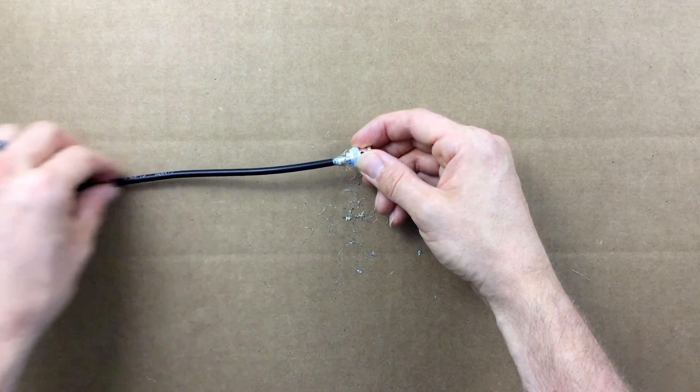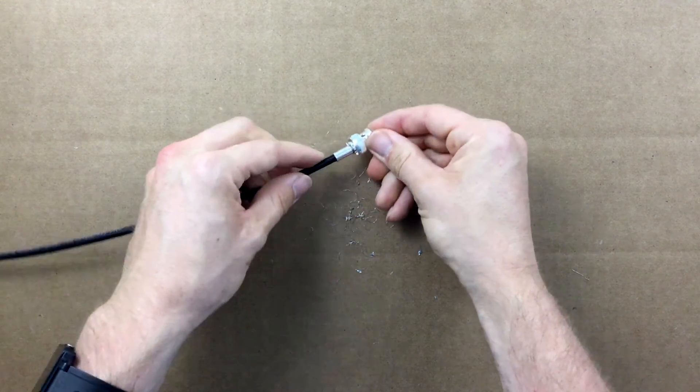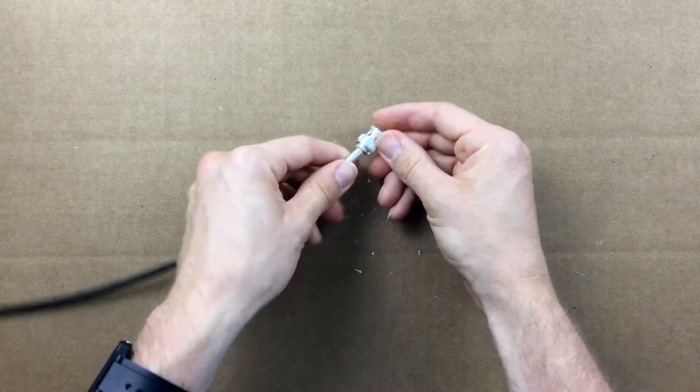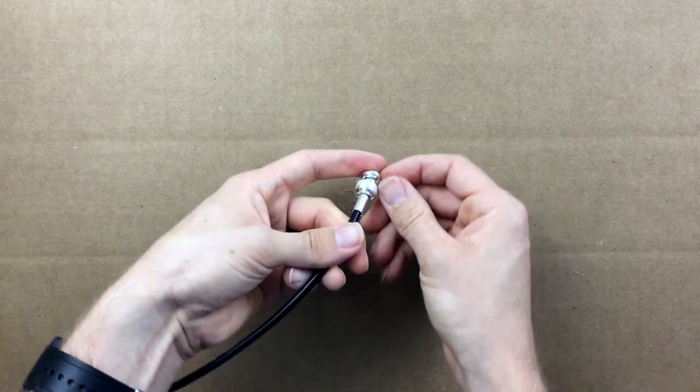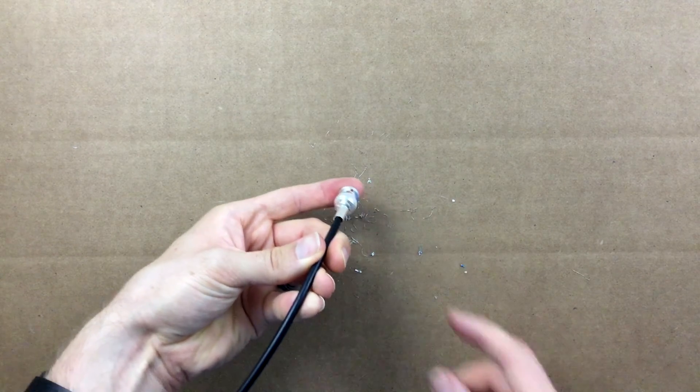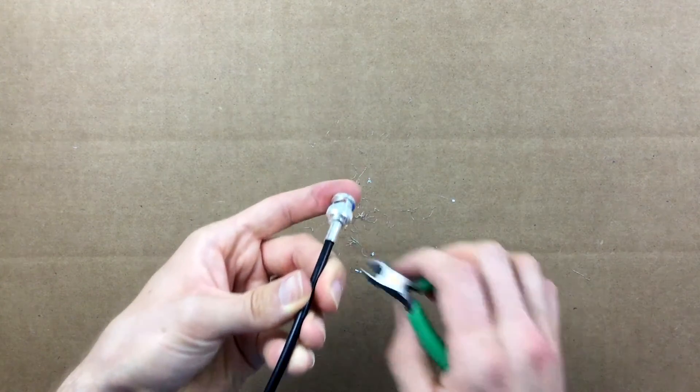Grab the ferrule we placed on the coax earlier and slide it up over the braid strands and the rear of the connector. Look at where the ferrule meets the connector body. If there are strands of the braid that are too long and extend out too far, trim them back with your cutters.